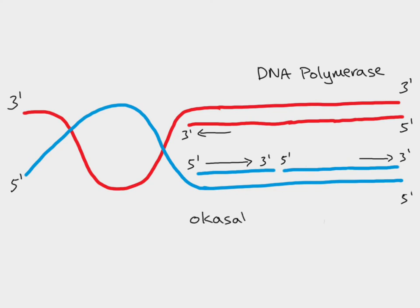These sections are called Okazaki fragments. And they'll be made along the whole length of our new DNA strand, in the direction of 5' to 3'.